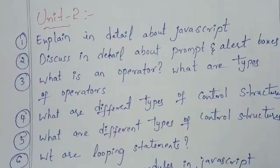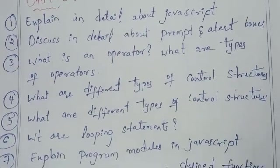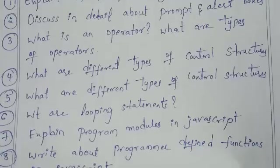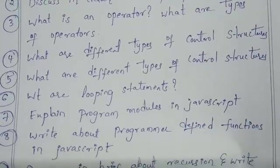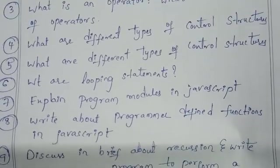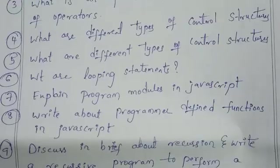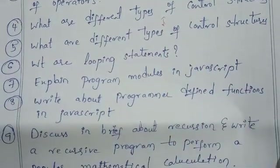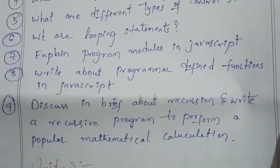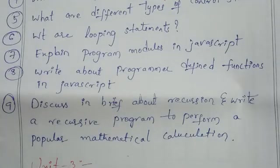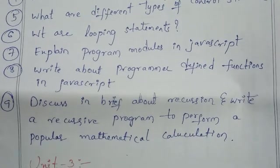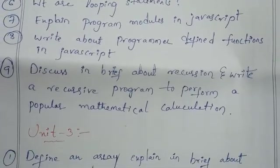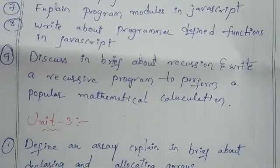Let's look at Unit 2 about JavaScript. First question is about JavaScript introduction. Second question is about prompt and alert dialog boxes. Third one is about operators. Fourth one is about control structures. Fifth one is about different types of controls. Sixth question is what are looping statements. Seventh one is about program modules in JavaScript. Eighth one is about programmer-defined functions in JavaScript. Ninth one is about discussing recursion briefly.